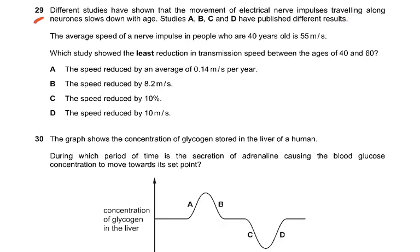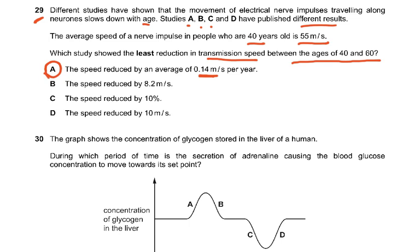Question 29: different studies show that the movement of electrical impulses along neurons slows down with age. The average speed of a nerve impulse at age 40 is 55 metres per second. Which study shows the least reduction in transmission speed between ages 40 and 60? Study A: speed reduced by 0.14 metres per second per year. The others — 8.2 m/s, 10%, 10 m/s — are all greater reductions. So the answer is A.